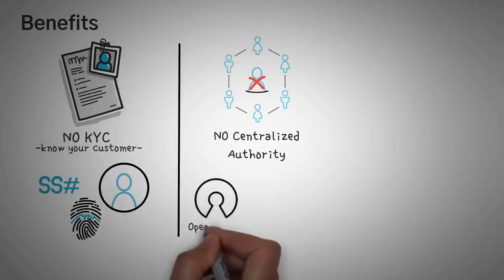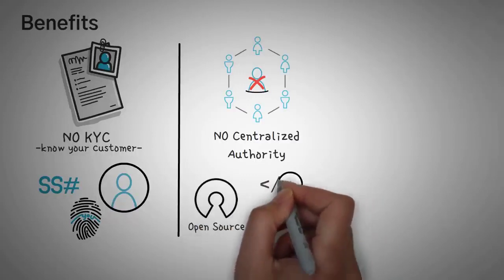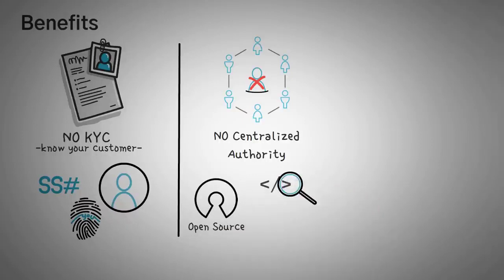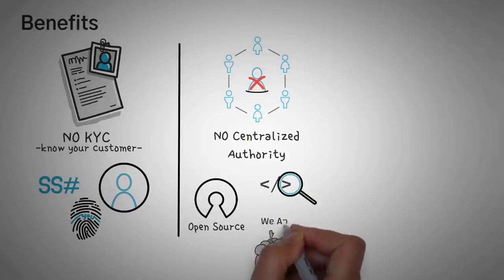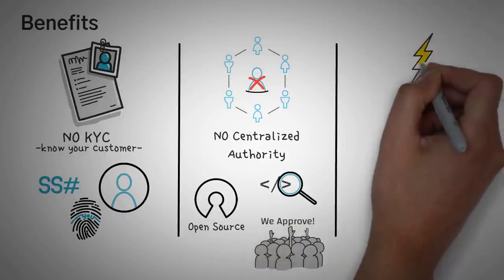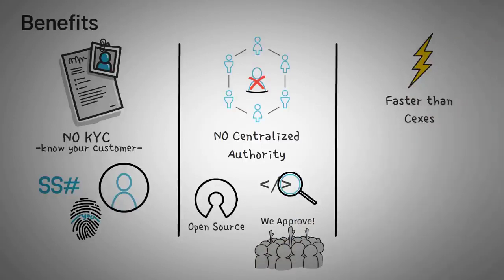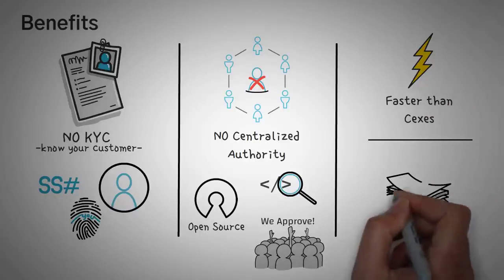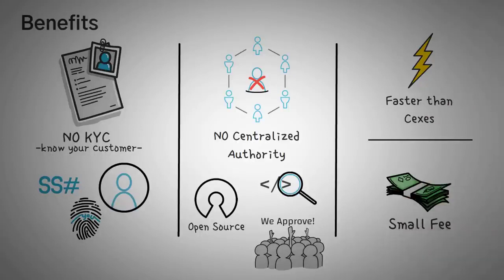This code is what we call open source, which means you can take a look at it if you want and find bugs or errors. Usually, this means hundreds of great developers are going to check it out before using it. Now, another thing is that these DEXs are usually much faster than centralized exchanges, allowing you to transfer tokens in mere seconds. And they usually require a very small fee, pennies on the dollar compared to centralized exchanges.